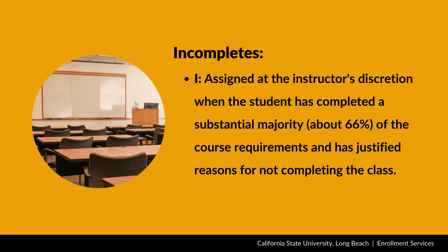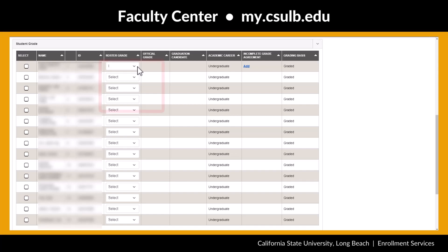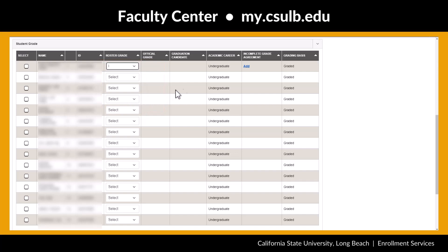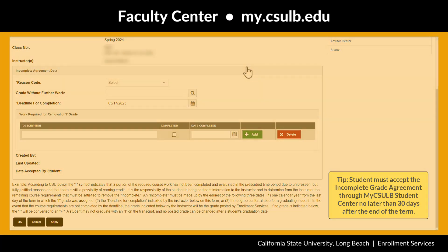Another circumstance is an incomplete. Students who are unable to complete all assigned work, have completed at least 66% of the class requirements, and have unforeseen but justified reasons for not completing the class work may be eligible to receive an incomplete or I final grade. If you assign an incomplete grade to a student, you will need to complete an incomplete agreement for the student. Select the I grade in the drop-down menu and select Save. A new link to add agreement will appear in that row. You will need to create an agreement to submit your final grades for your class.